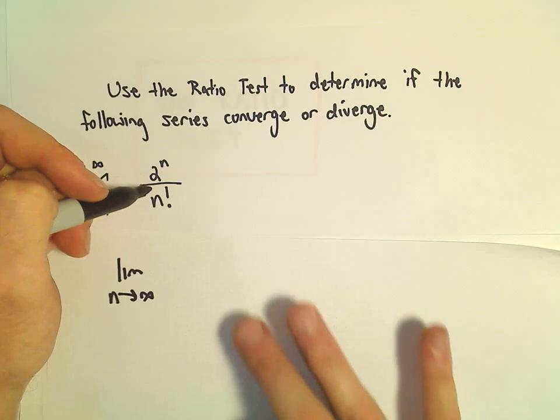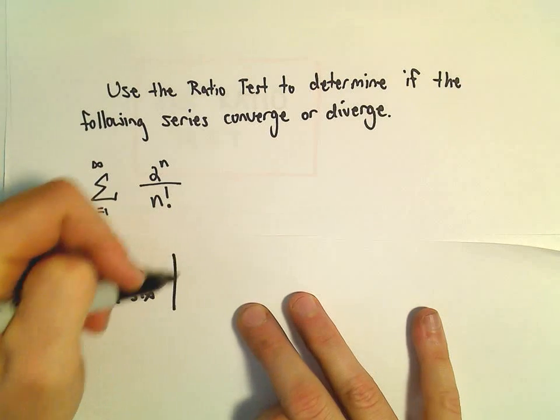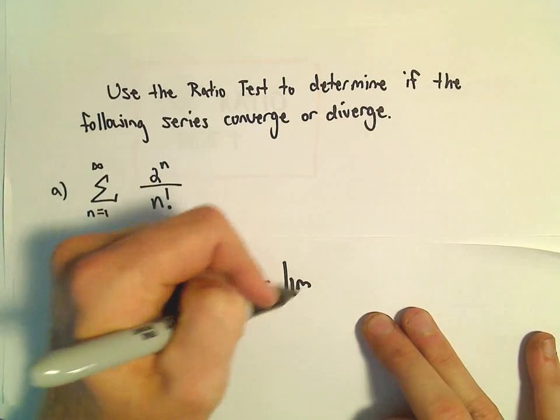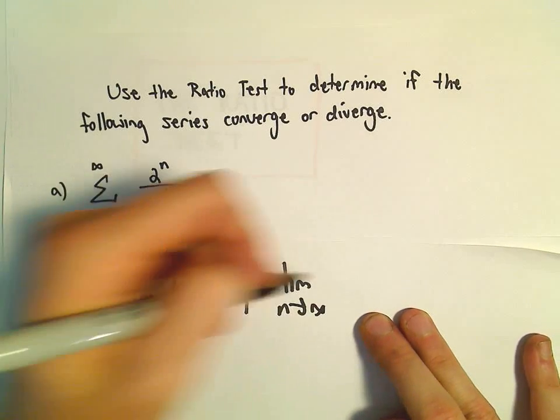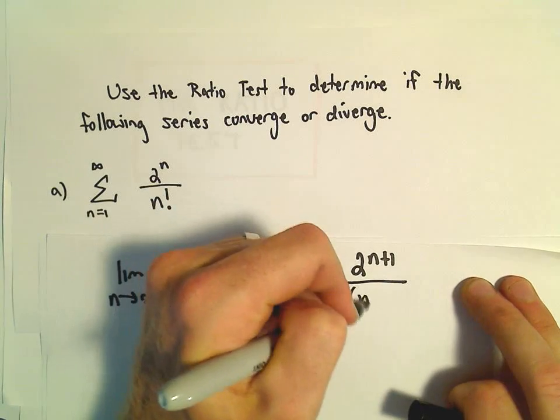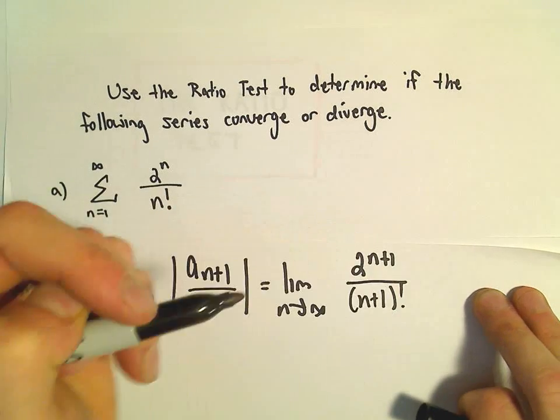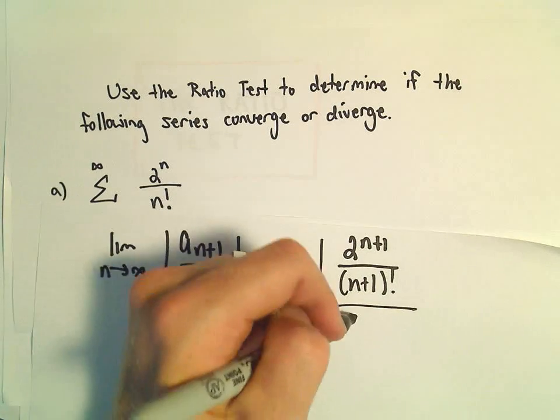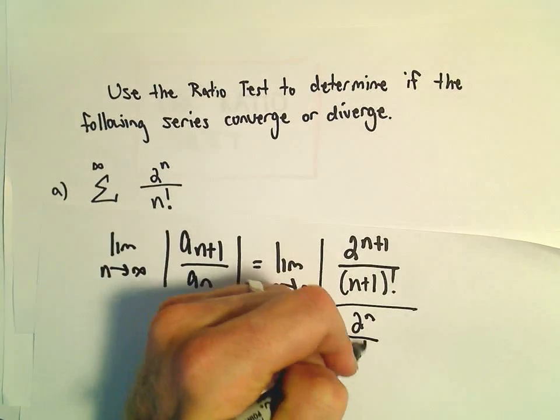So everywhere there's an n, we're going to plug in n+1. So here we'll have 2^{n+1}/(n+1)! And then we're going to divide that by the original, 2^n/n!.